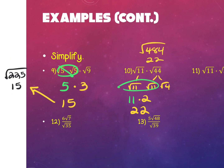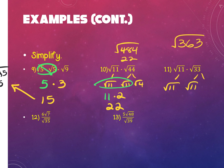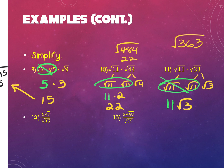For the next one, multiplying 11 times 33 gives 363, which is not a perfect square. So factor it instead. Leave the square root of 11 — it's prime. Break 33 into 11 times 3. You have a pair of 11s that comes out of the square root. The 3 doesn't have a pair, so it stays underneath.